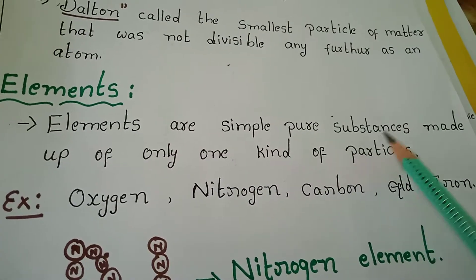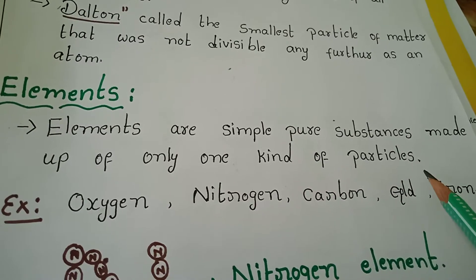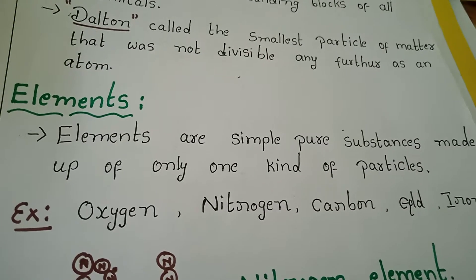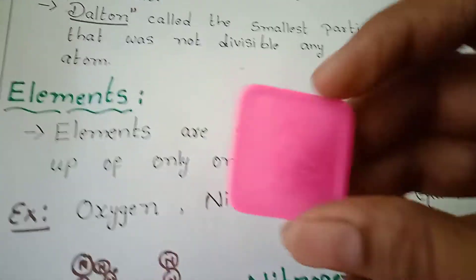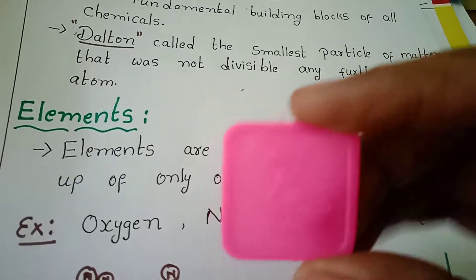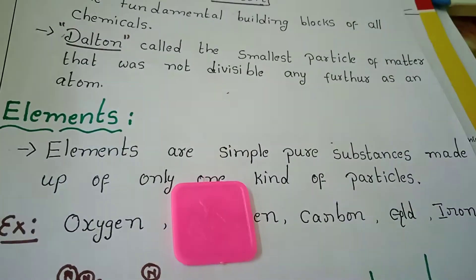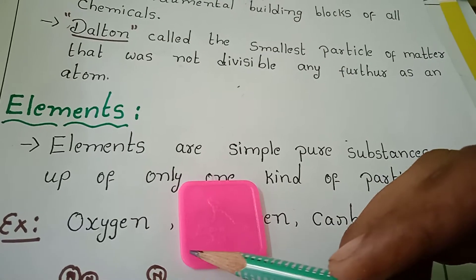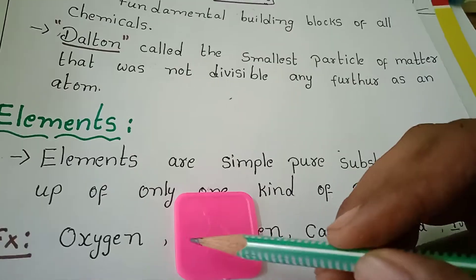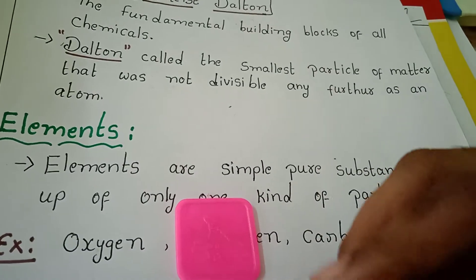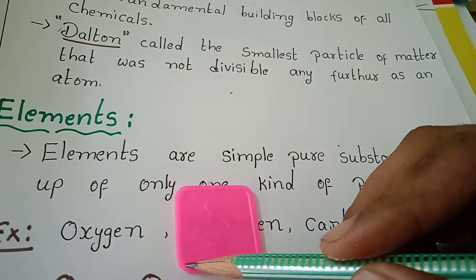Elements are simple pure substances made up of only one kind of particle. Suppose — see here — oxygen, or nitrogen, or any one chemical. In this case, think of pink-colored small dots. All these small dots together form one big block.